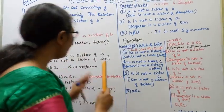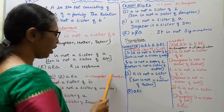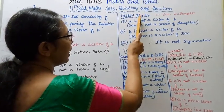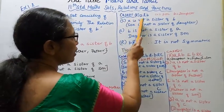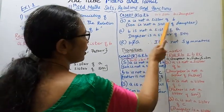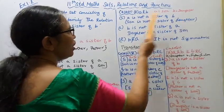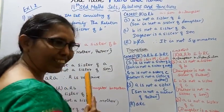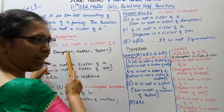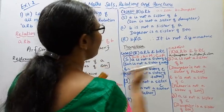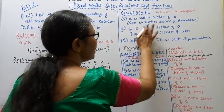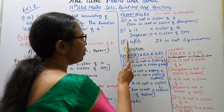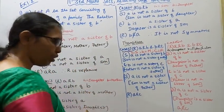Case 2 for symmetry: Let a be son and b be daughter. a is related to b means son is not a sister of daughter — true. But checking b related to a: daughter is not a sister of son — however, daughter IS a sister of son. So b is a sister of a, meaning b is not related to a. Therefore a related to b does not imply b related to a in this case.